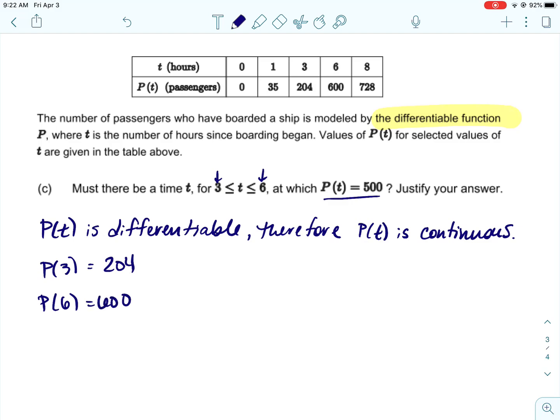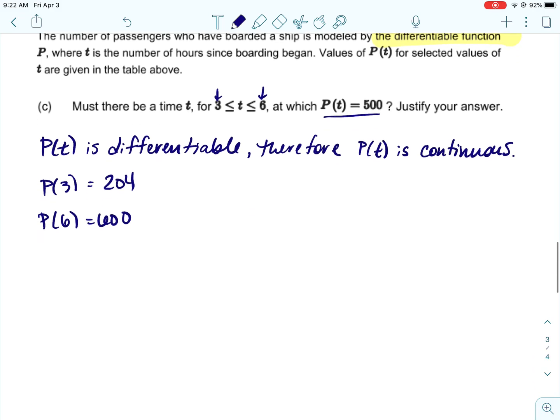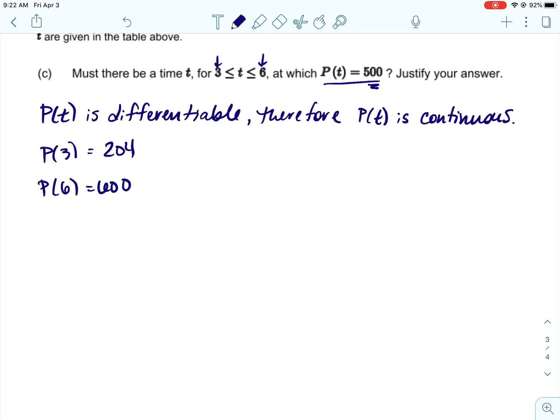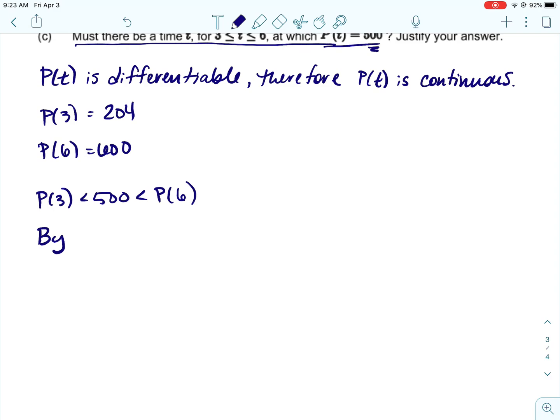Alright, then we would need to find p of three and p of six. And that's not hard. We're just going to look at the table. Alright, and then we would make a statement that 500 falls in between those two. So we would say p of three is less than 500 is less than p of six.